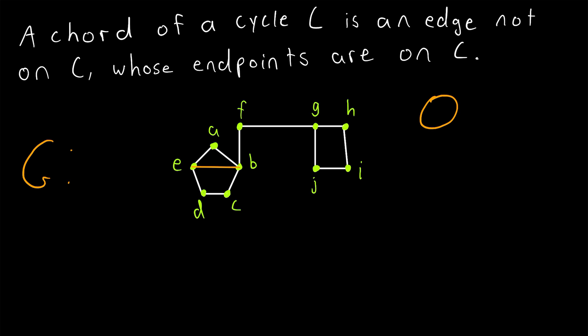Going back to the circle, it's like a line segment whose endpoints are both on the cycle. So that's what a chord of a cycle is.